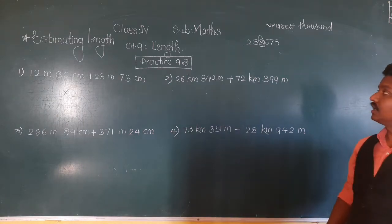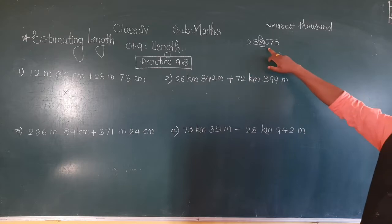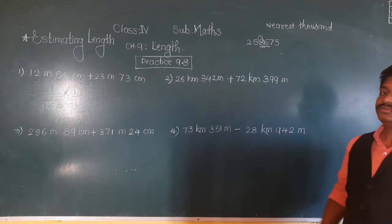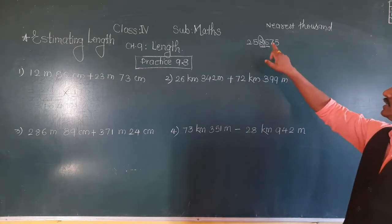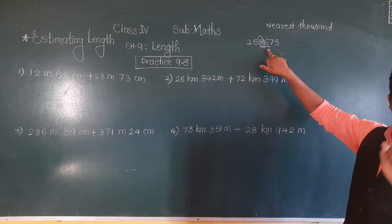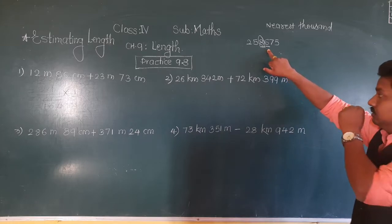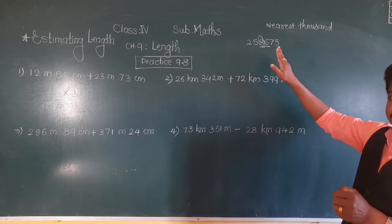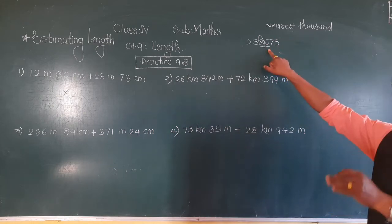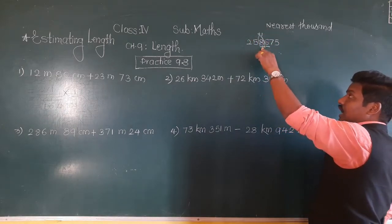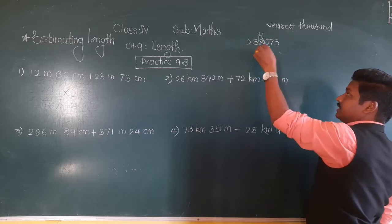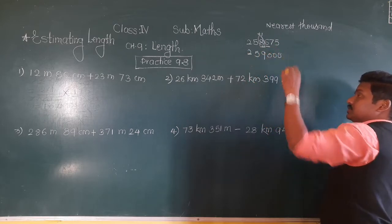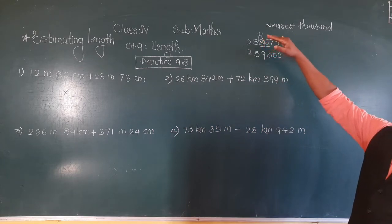After eight, the next digit is six. Now we have two rules: if the next digit is 0, 1, 2, 3 or 4, then keep this digit as it is. If the next digit is 5, 6, 7, 8 or 9, then add one. Here the next digit is six, so in the thousands place we add one — eight plus one is nine. Write the digits before as they are, and after put three zeros. In this way we can round off to the nearest thousand.